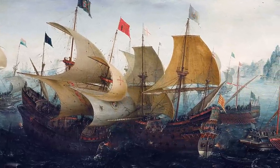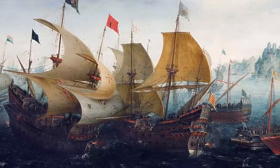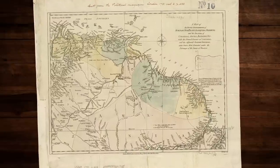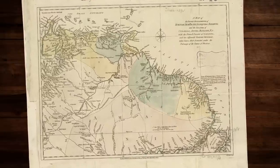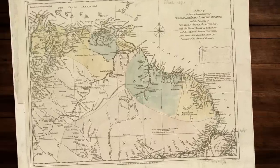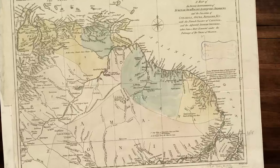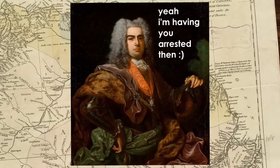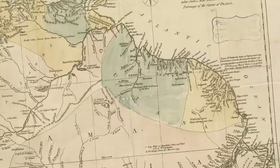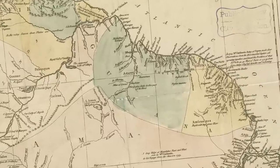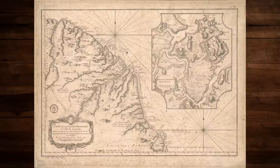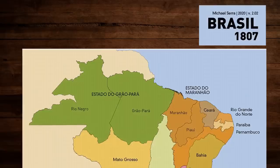Perhaps as revenge for those Dutch invasions when they were ruled by the Spanish, the Portuguese entered Dutch Guiana in 1714, starting a local war that ended up including France as well. The Portuguese were vastly successful at first, but then the commander refused to take orders from the king, was arrested, and caused the failure of the campaign, losing the conquered territory. Some other incursions happened in coming decades, like the conquest of parts of French Guiana in 1800 or 1808 — they actually held Cayenne until 1817.